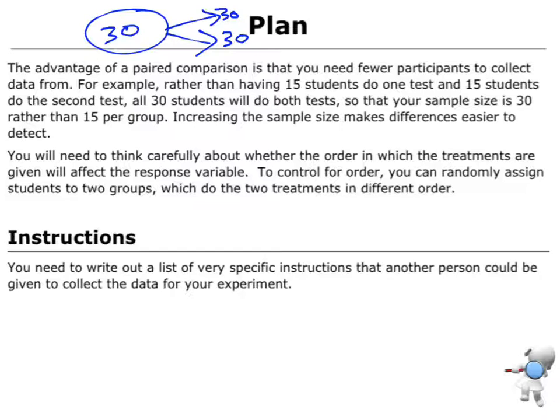What I want to do is think about the order in which those treatments are going to be given. I need to randomly assign them to which one I'm going to do first, and every student could get it in a different order. I need to write out a very specific list of instructions, and it needs to be detailed enough that somebody else could pick up my instructions and do it exactly.